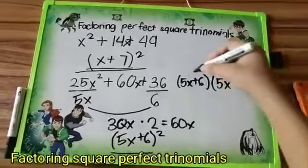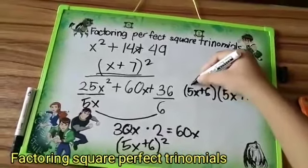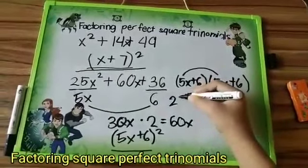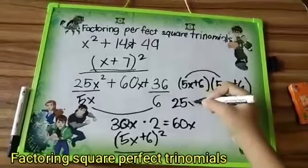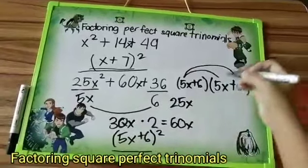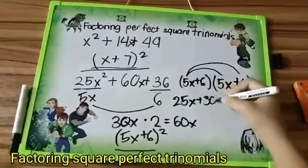So we multiply 5x times 5x, which equals 25x squared. Now 5x multiplied by 6 is equals to 30x.